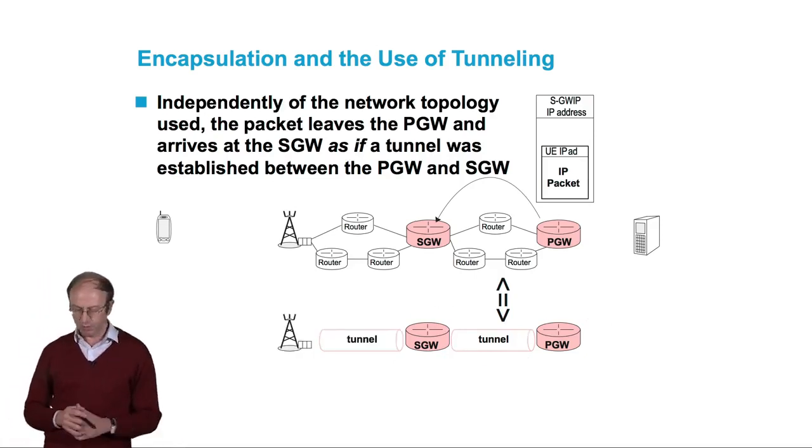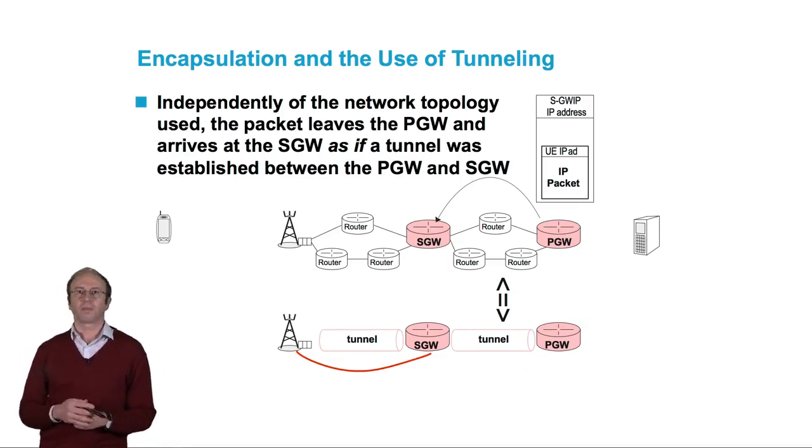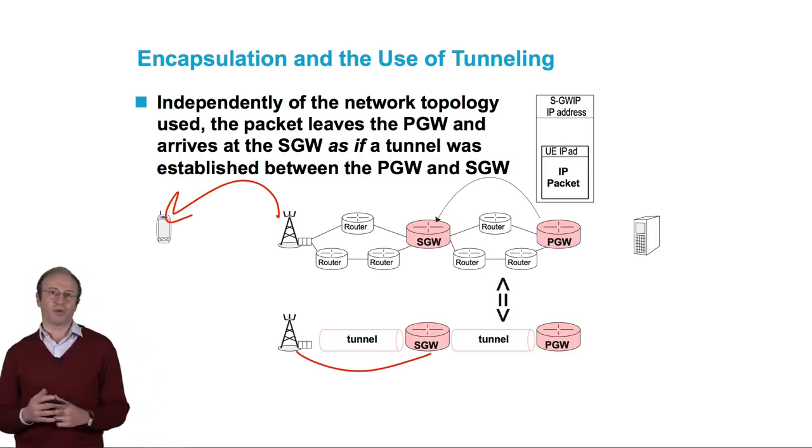The same principle is used between the serving gateway and the eNodeB. We have therefore a second tunnel, and then transmission on the radio interface.